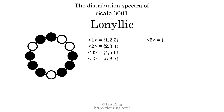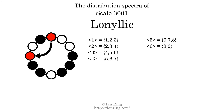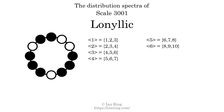The generic interval of 5 scale steps comes in 3 different specific interval sizes: 6 semitones, 7 semitones, and 8 semitones. The spectrum width of this generic interval is 2. The generic interval of 6 scale steps comes in 3 different specific interval sizes: 8 semitones, 9 semitones, and 10 semitones. The spectrum width of this generic interval is 2.